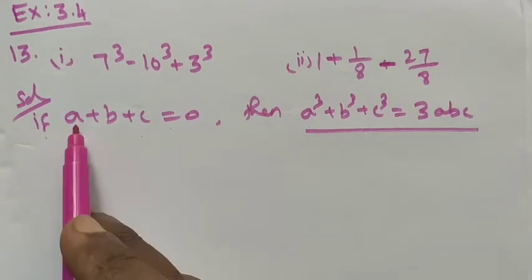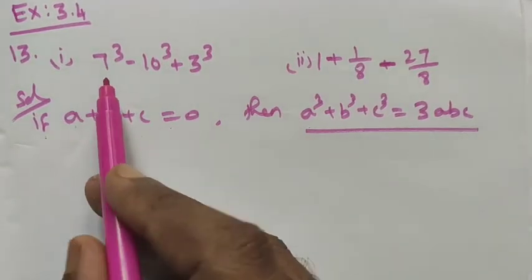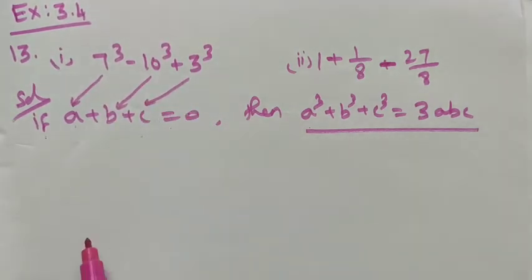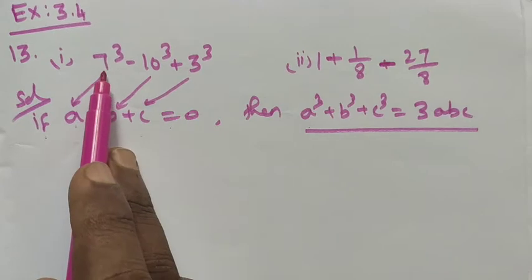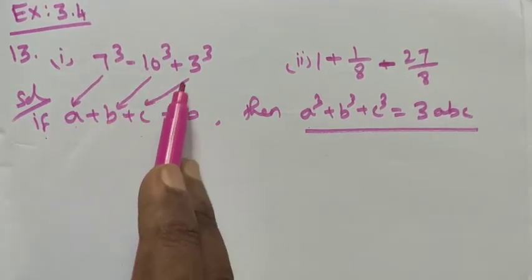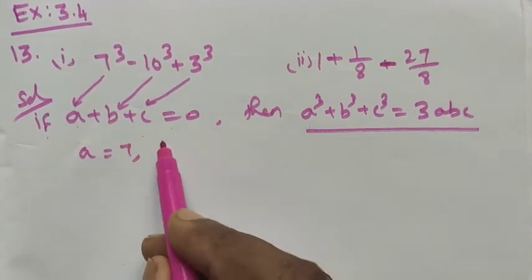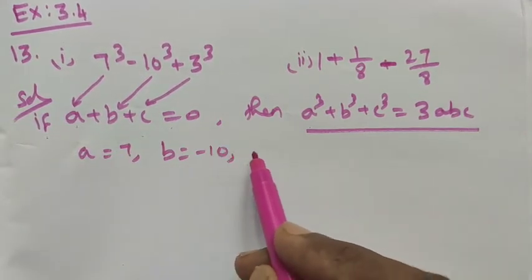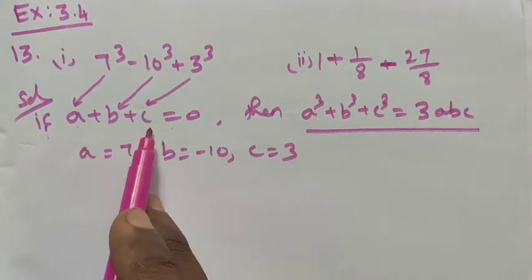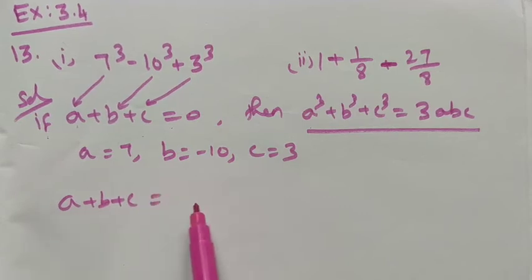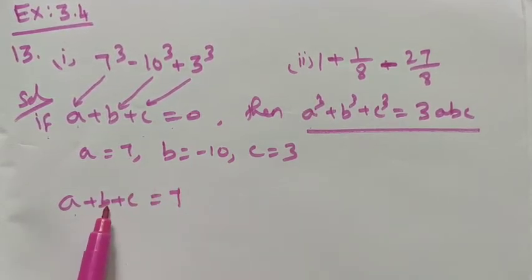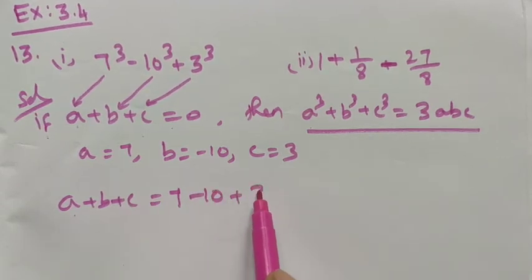For the first expression, in the place of a is 7, b is minus 10, and c is equal to 3. Don't take the cube value — just assign a = 7, b = minus 10, c = 3. Now check if a plus b plus c equals 0: the place of a is 7, b is minus 10, c is plus 3.